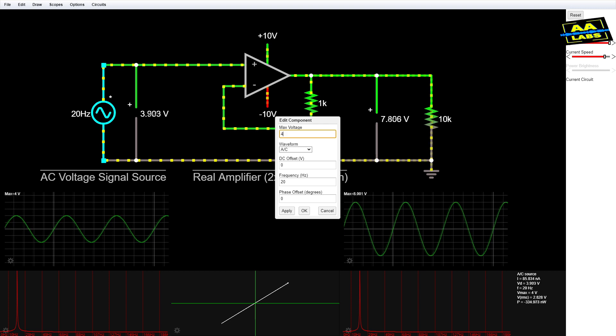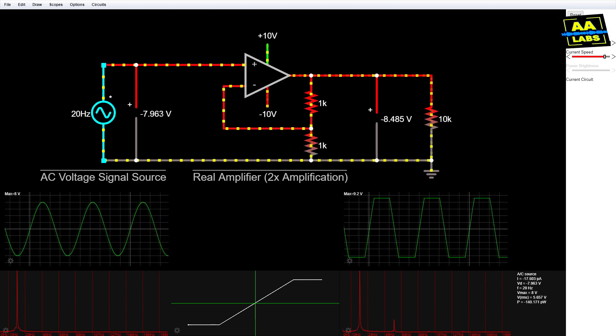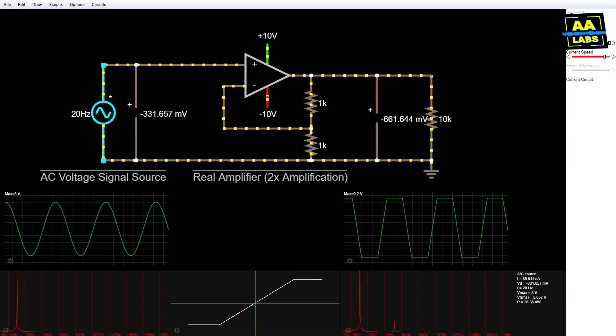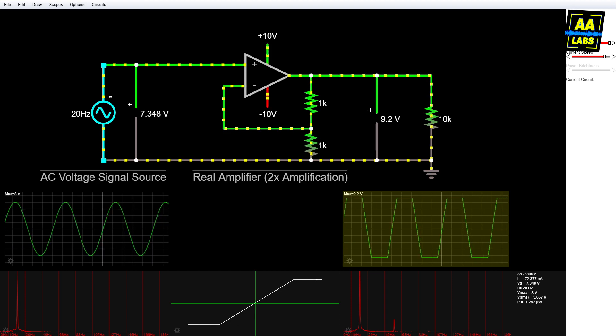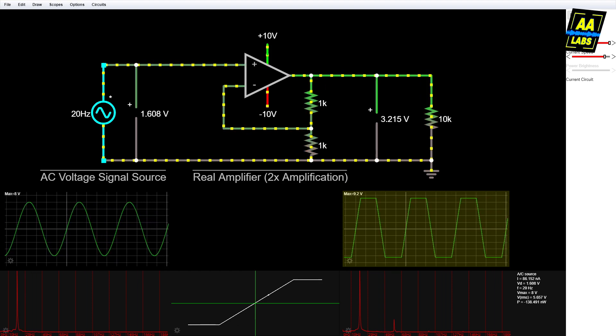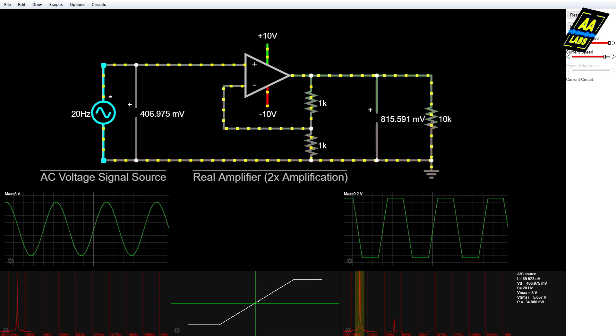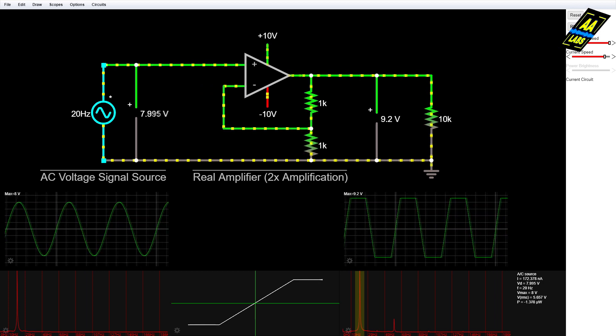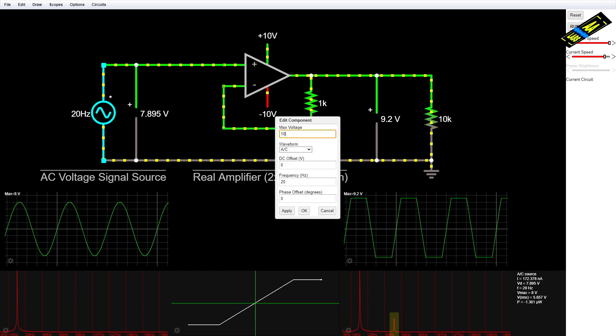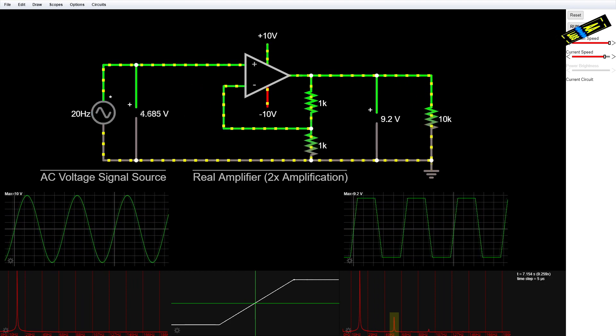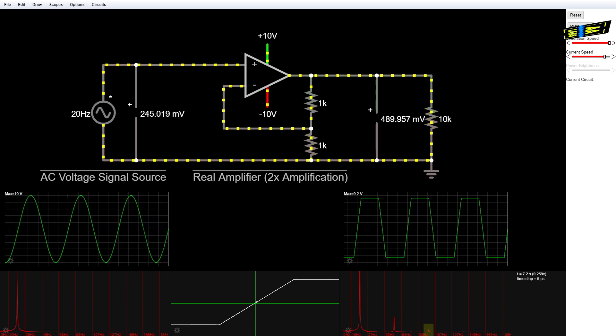Now, when I input a pure sinusoid with an amplitude of 8 volts, the op amp cannot amplify to 16 volts, as it saturates at about 9 volts. Our output waveform gets clipped and now contains more than one frequency component. Not only is the fundamental frequency present and strongest at 20 hertz, but there is also a peak at 60 hertz. If we increase the input voltage to 10 volts, the saturation gets more extreme, and a frequency component at 100 hertz becomes more visible.